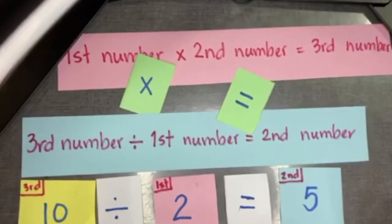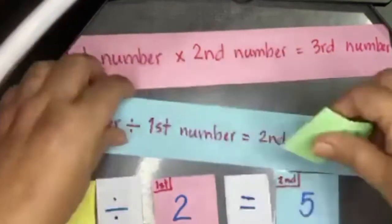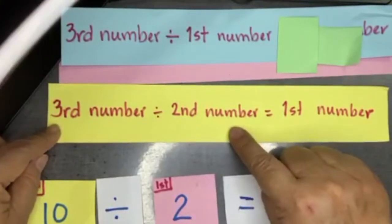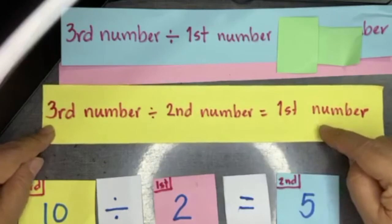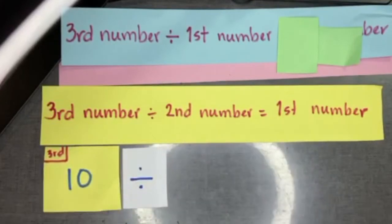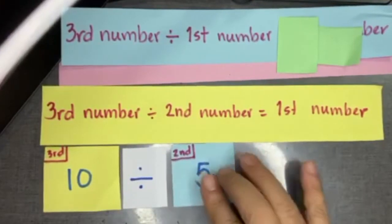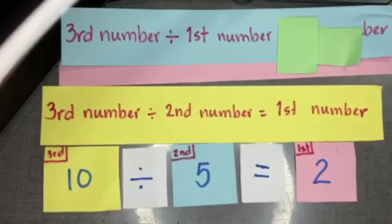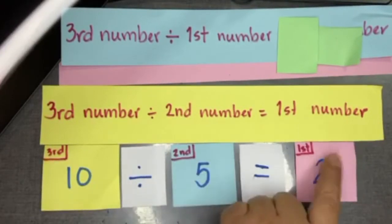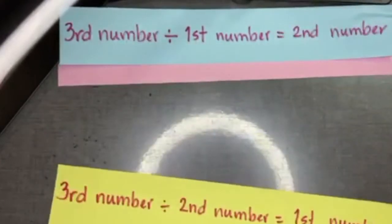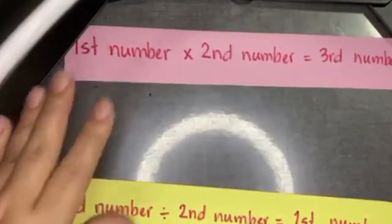So we can see now the relationship between multiplication and division. Another relationship: the third number divided by the second number equals the first number. Our third number is ten divided by the second number five, which equals the first number two. Ten divided by five equals two. Correct.